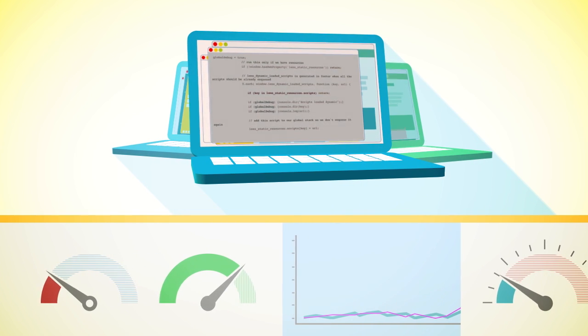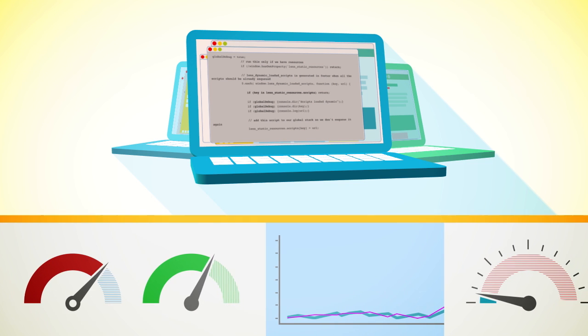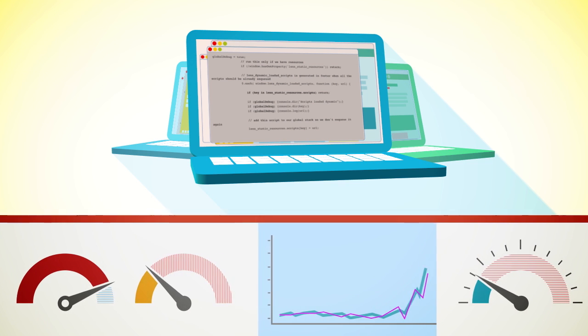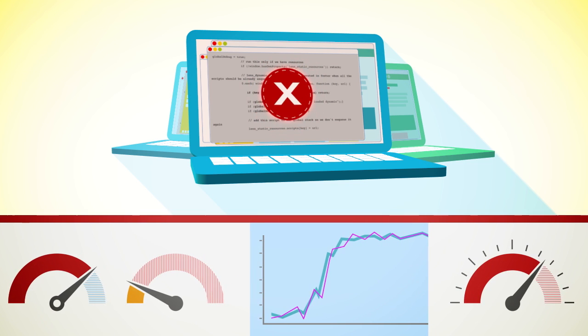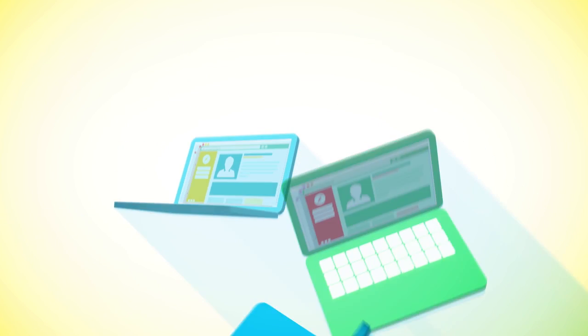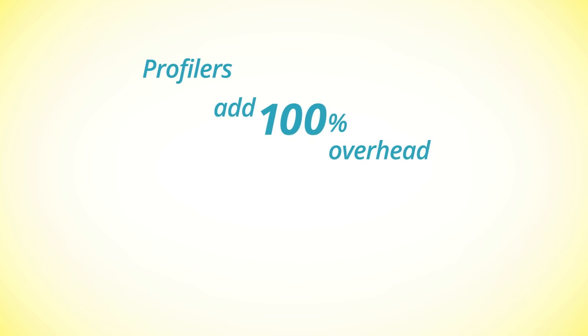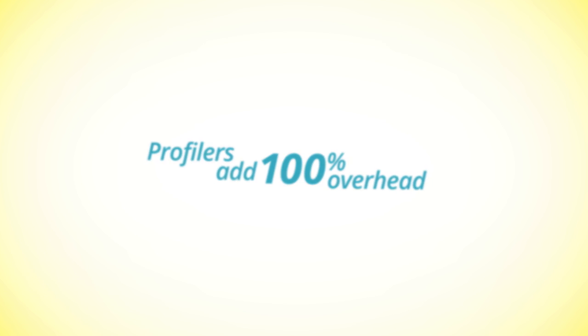But what happens when you deploy to production? Suddenly, there are 10,000 users and three different features released in the last week, and when you're tracking down a timed out request, the fact that profilers add 100% overhead suddenly seems much more important.